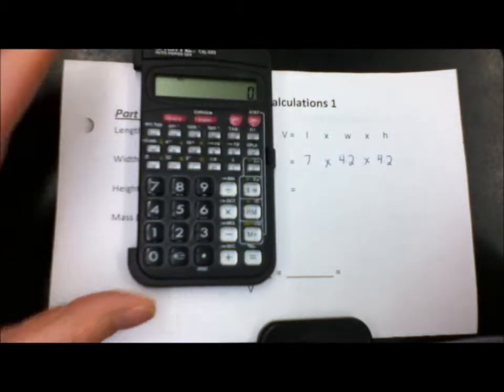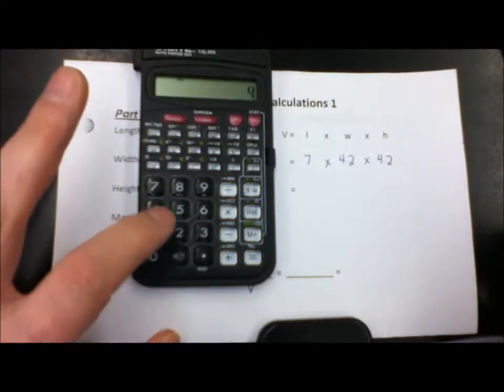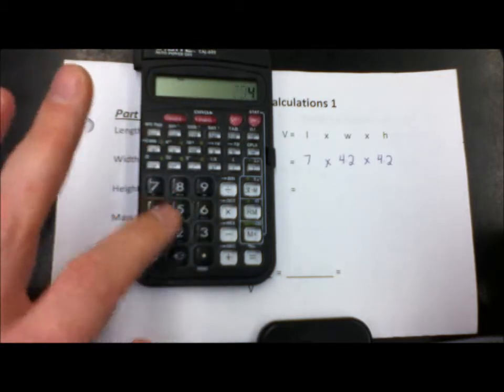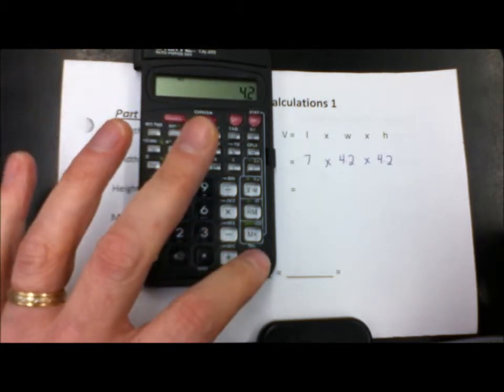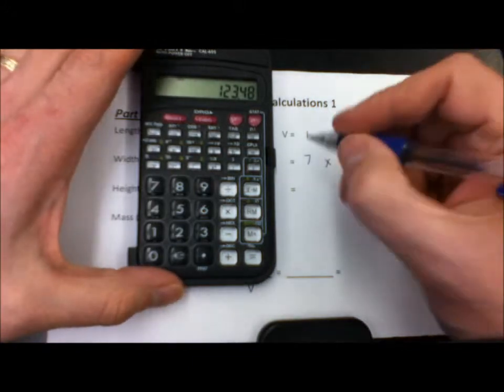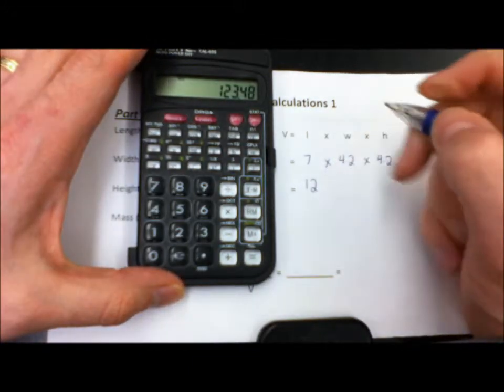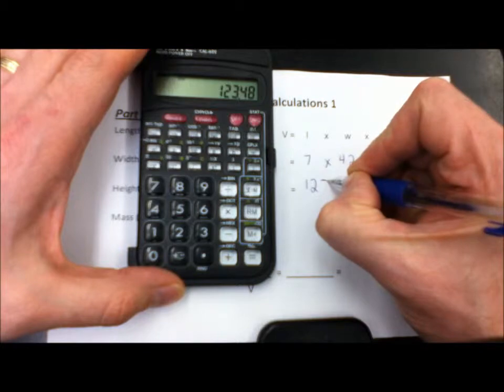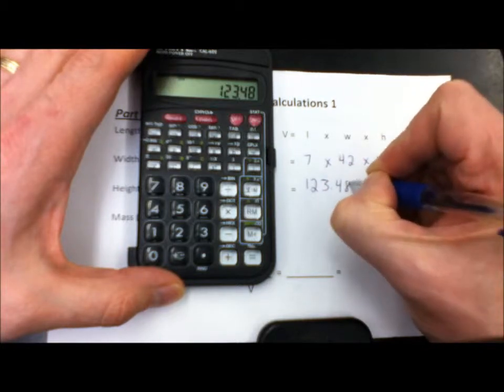Plug those numbers into our calculator. So 7 times 4.2 times 4.2. There goes the bell. And we get a volume of 123.48.